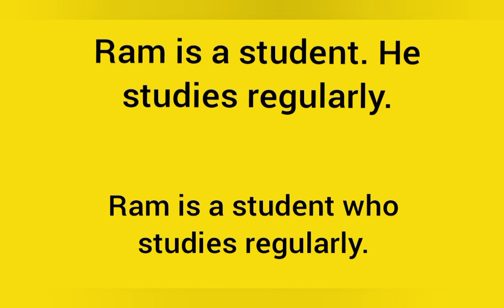Ram is a student. He studies regularly. How will you join these two sentences? It's done for you: 'Ram is a student who studies regularly.' In this case, 'who' is used to join these two sentences. Quickly, let's look at the next example.